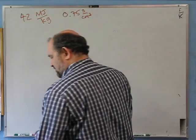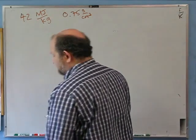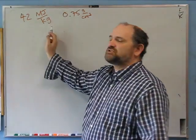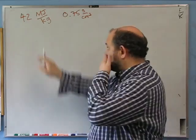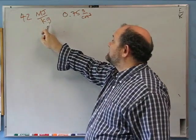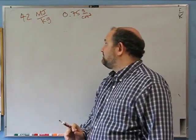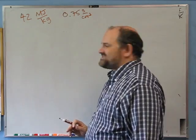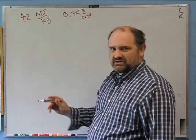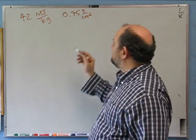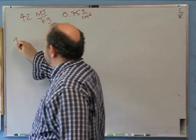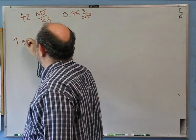How much energy is released by burning a gallon of gas? You get 42 megajoules out per kilogram. So really this is just a unit conversion — a density unit conversion problem. I have to figure out how many kilograms one gallon of gas is.